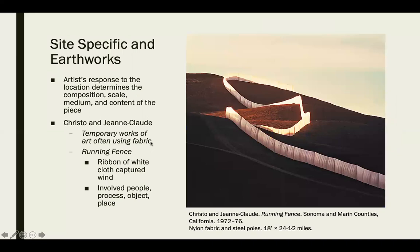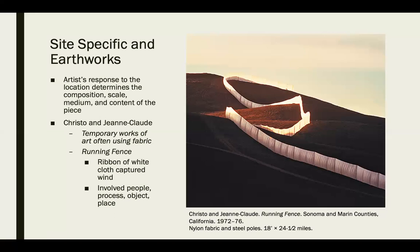Site-specific work and earthworks emerge in the early 1970s — the artist's response to a location determines the composition, scale, medium, and content. Christo and Jean-Claude are well-known earthwork designers. One piece runs a line of fabric through a landscape to obstruct it and offer something to compare the landscape against. The ribbon of white cloth also captured the wind, making wind currents that could only be felt look like something you could actually see moving and changing.